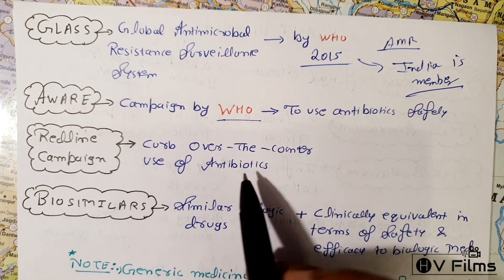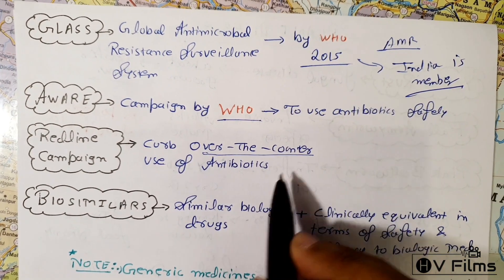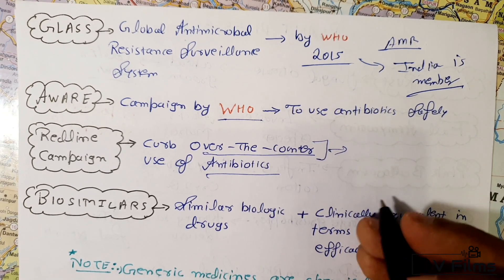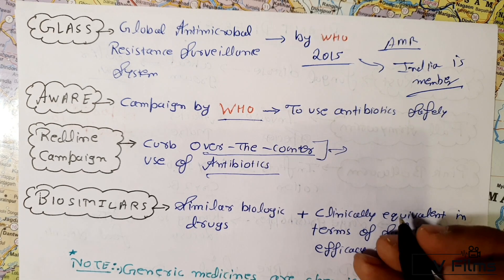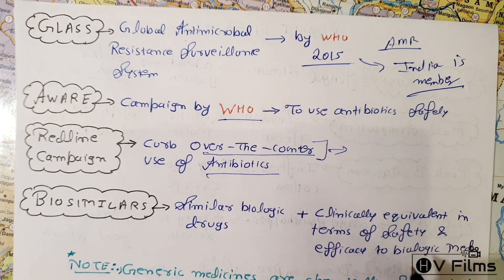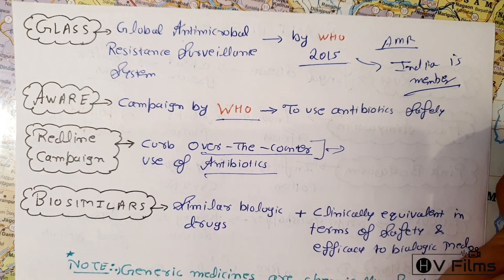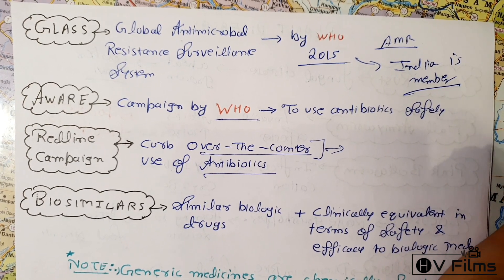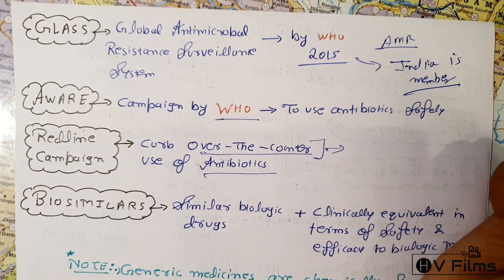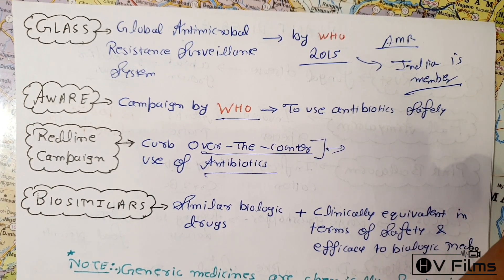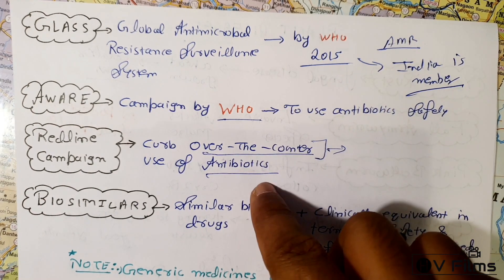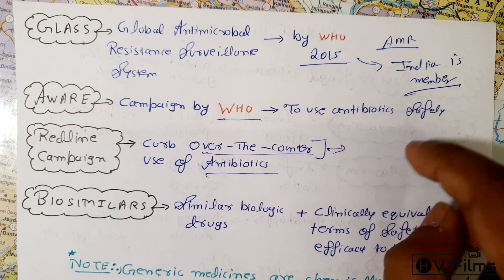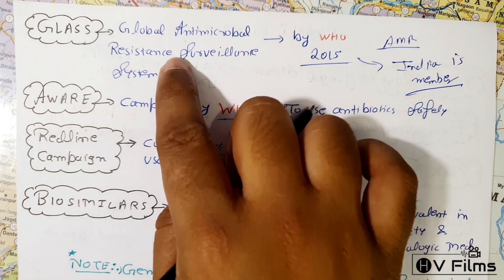The Red Line campaign aims to curb the over-the-counter (OTC) use of antibiotics. OTC medicines are those that do not require any prescription — for example, if you ask a chemist for a painkiller, they give it without a prescription. The Red Line campaign targets reducing such unsupervised antibiotic use.